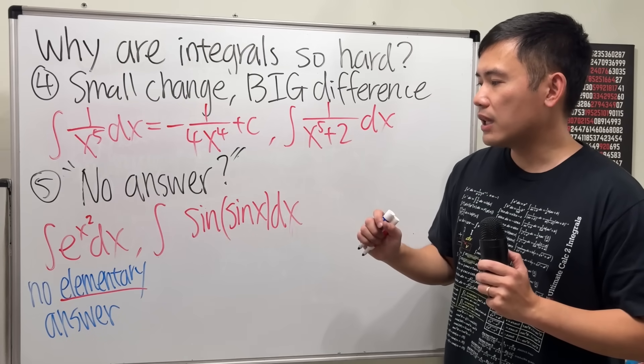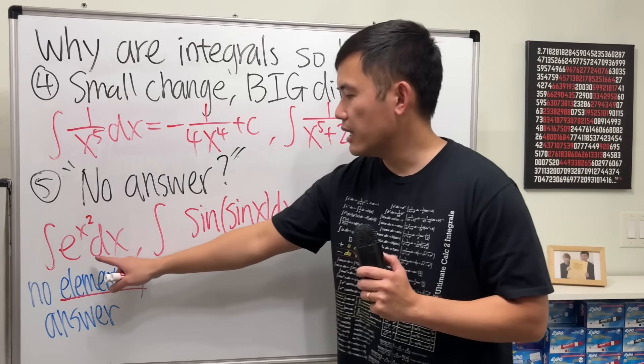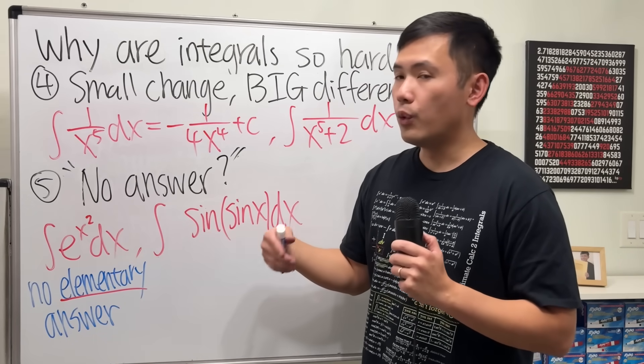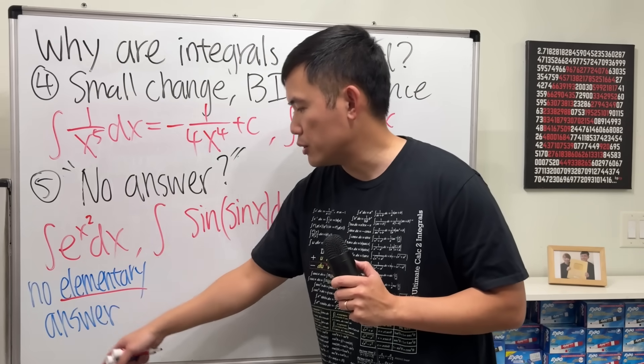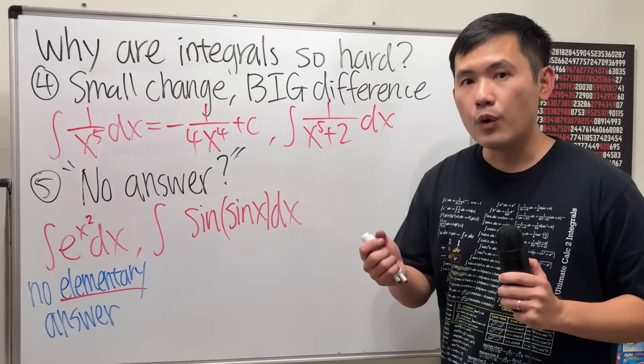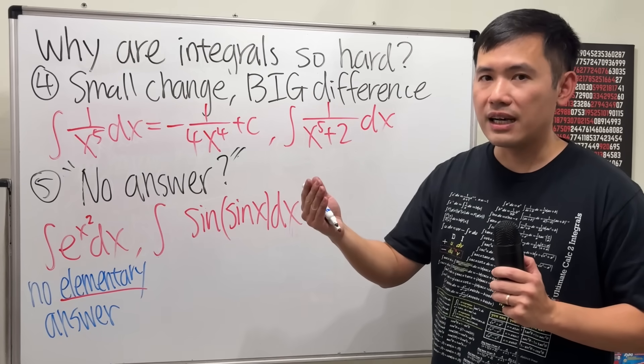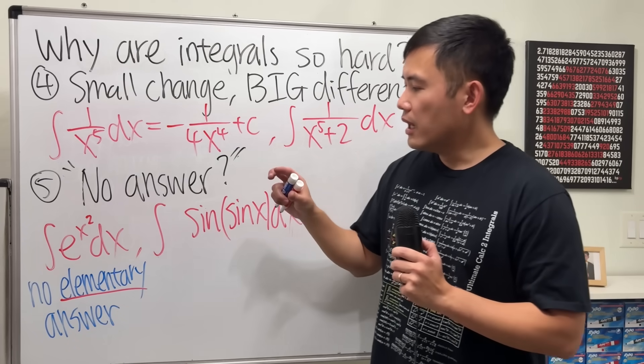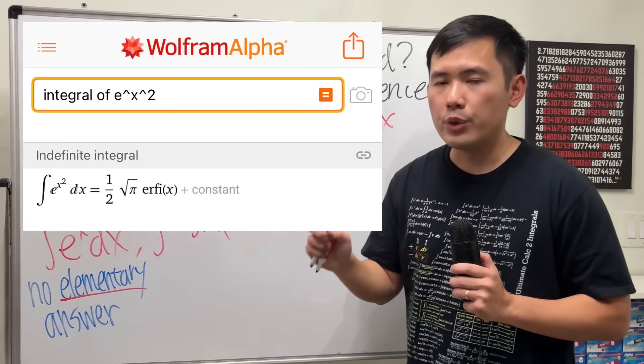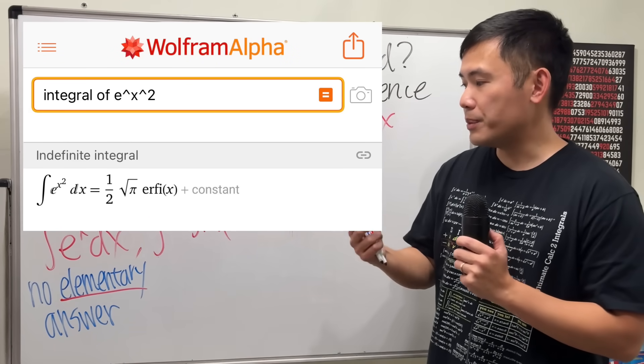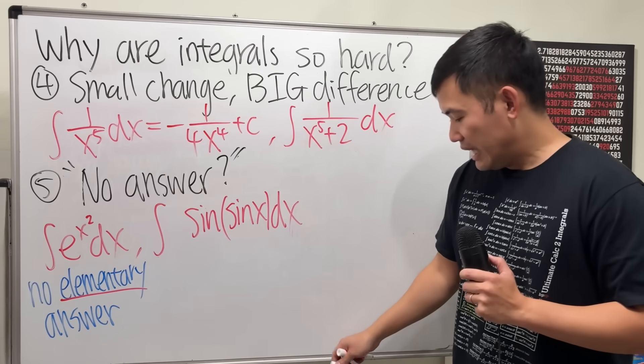But now, if you are in your Calc 2 class, it's totally okay to say this right here has no answer. Or a more sophisticated way to say it is, it has no elementary answer. Later on, once you get to a higher level math class, you can actually see a definition for the answer for this right here, and that's called the imaginary error function. And that will be the advanced answer for that.